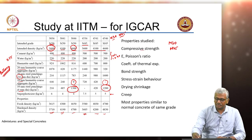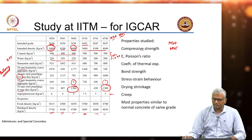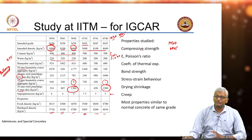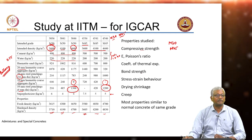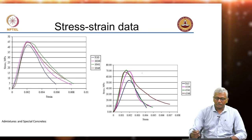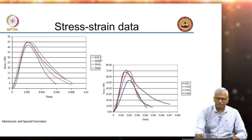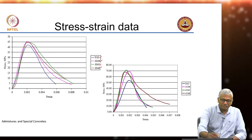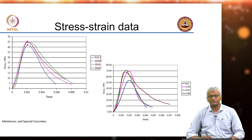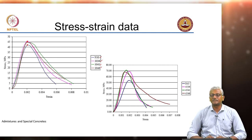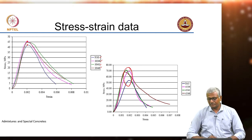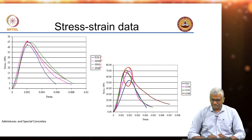Different properties were studied: compressive strength, modulus of elasticity, Poisson's ratio, coefficient of thermal expansion, bond strength, stress-strain behavior, drying shrinkage, and creep. Most properties were found to be similar to normal concrete of the same grade. Looking at stress-strain curves, the peak stress for the 30 MPa mixes is significantly higher than 30 MPa — over 40 MPa — but the strain at peak is more or less similar. The strain at peak, typically assumed as 0.002, seems to hold quite well.